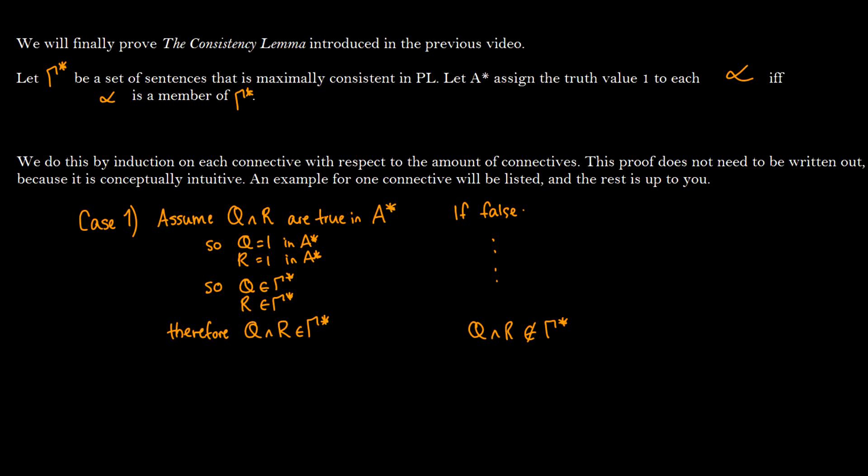So for each connective we need to prove that alpha is in gamma star essentially. So I'm using the and case. I'm not going to do the other cases, but you need to prove or, the arrow, and negation. So you just assume that alpha is equal to q and r in here.